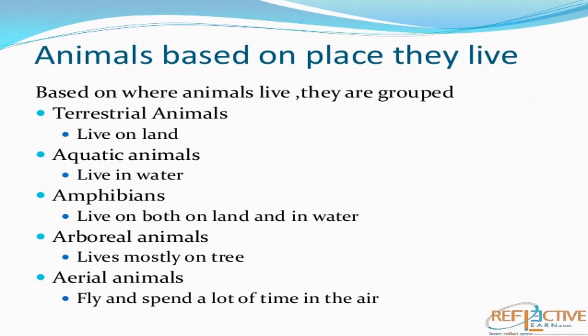Animals can also be classified based on the place they live. Based on where animals live, they are grouped as: terrestrial animals that live on land, aquatic animals that live in water, and amphibians that live both on land and in water. Let's see each in detail.